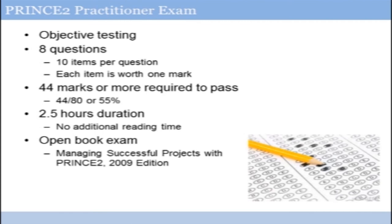The PRINCE2 Practitioner exam provides eight questions over two and a half hours. Each of the eight main questions provides ten specific items, and each of those items is worth one mark. It may test different aspects of using PRINCE2 in a particular situation. In order to pass the examination, you're required to gain 44 marks across the exam — a 55 percent result. Unlike many other exams, this particular exam is an open book exam. You can actually bring your copy of Managing Successful Projects with PRINCE2, 2009 edition, with you and utilize it during the examination. We're going to make reference throughout this course to where certain key information lives in that book so you can have that available when it comes time to sit the open book exam.